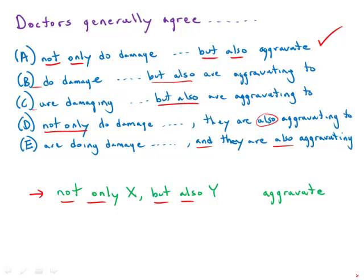But let's take a look at the verbs also. Ideally, we'd want the verbs to be as active as possible. And so in A, what we have is two active verbs, do damage and aggravate.